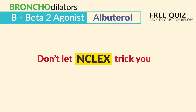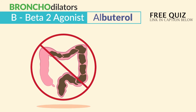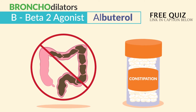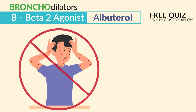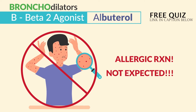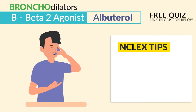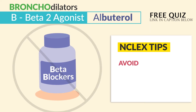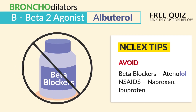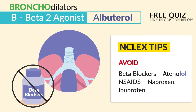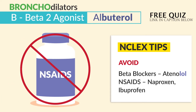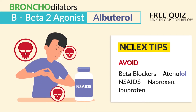Don't let the NCLEX trick you — commonly chosen distractors are not constipation (that's a side effect for opioid pain meds) and not hives (that's an allergic reaction, not an expected finding). For patient education, a little side note for asthmatic patients: always avoid beta blockers that end in LOL, like atenolol, which can cause bronchospasms. Also avoid NSAIDs like naproxen and ibuprofen, which can worsen asthma.